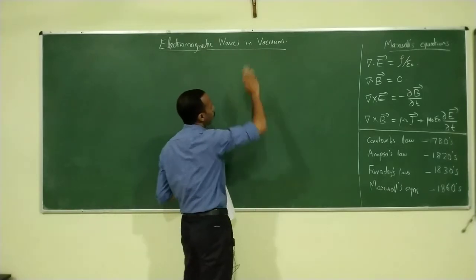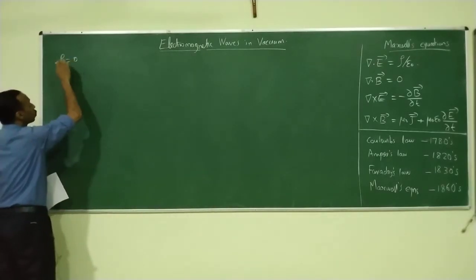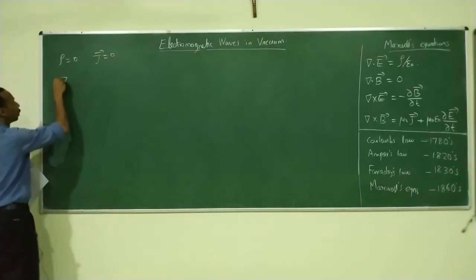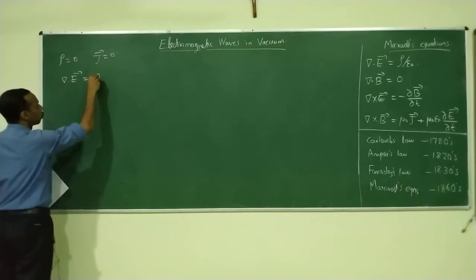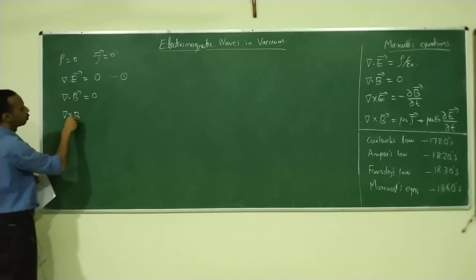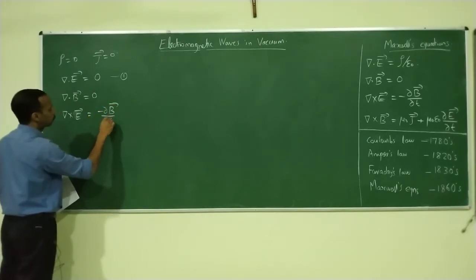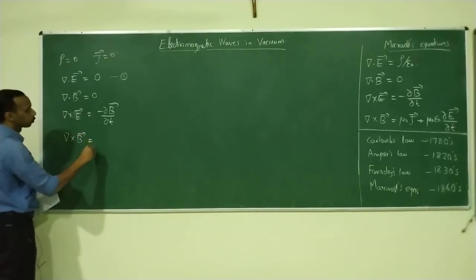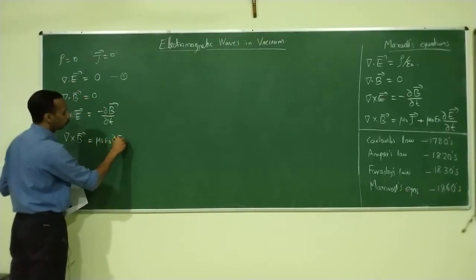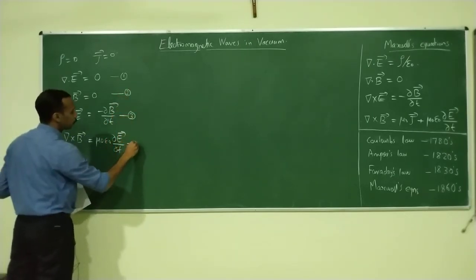We are considering electromagnetic waves in vacuum. Vacuum means it is free from charge and current, so we can assume rho is equal to zero — charge density and current density are zero. Maxwell's equations will take the form: del dot E equals zero (equation 1), del dot B is always zero (equation 2), del cross E equals minus dou B by dou T — Faraday's law (equation 3), and del cross B equals mu zero epsilon zero dou E by dou T (equation 4).